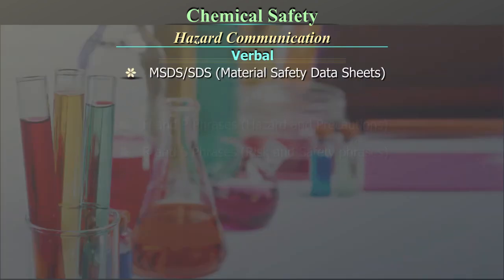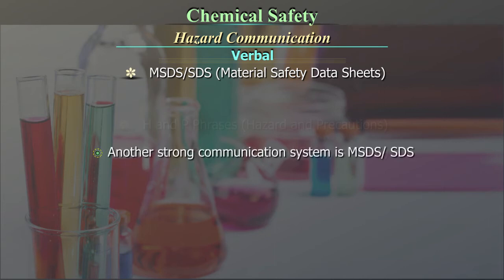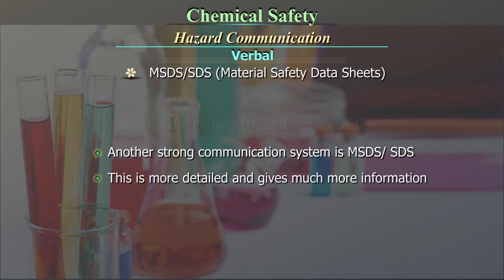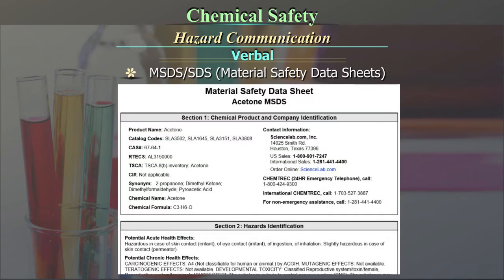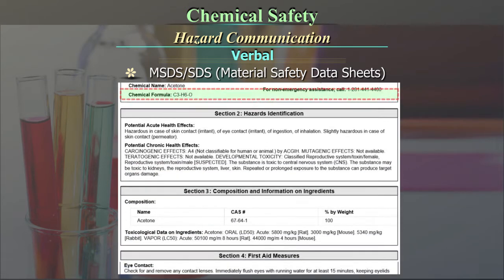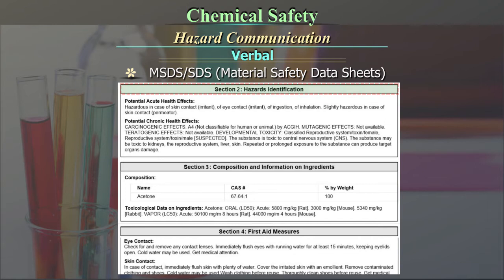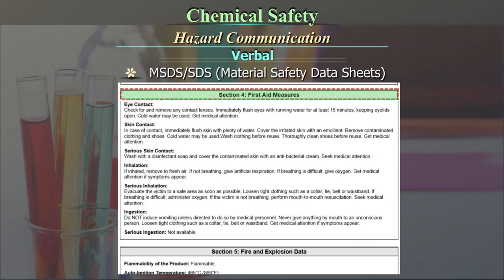MSDS or SDS — Material Safety Data Sheets. This is another strong communication system. It is more detailed and gives much more information. The following aspects are addressed through an MSDS: (1) Identification of the substance or mixture and of the company or undertaking; (2) Hazards identification; (3) Composition or information on the ingredients; (4) First aid measures.